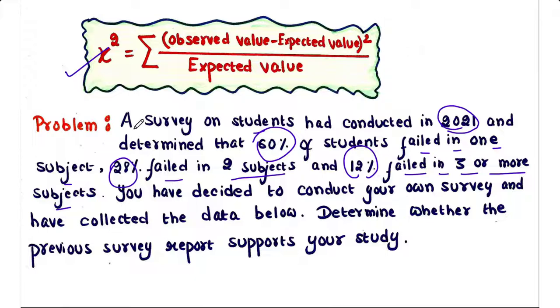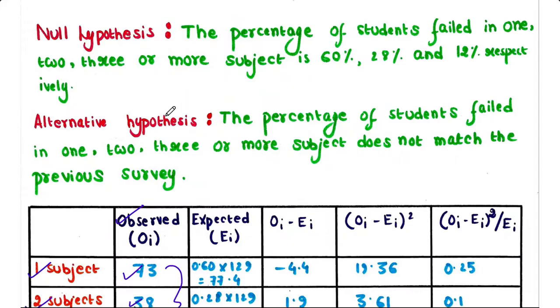Let's solve our problem now. Let's take the null and alternative hypothesis first. Null hypothesis: The percentage of students failed in 1, 2, 3 or more subjects is 60%, 28%, 12% respectively. That means we agree with the expected values.